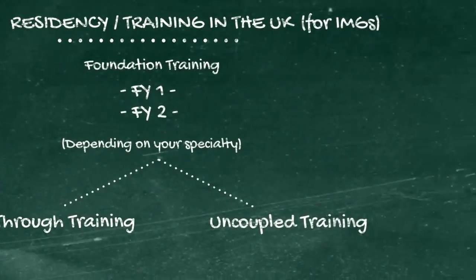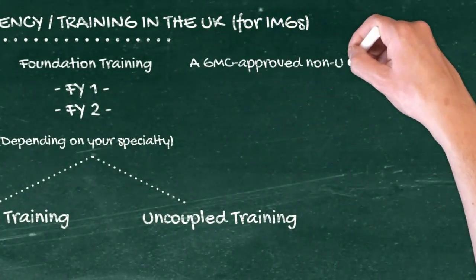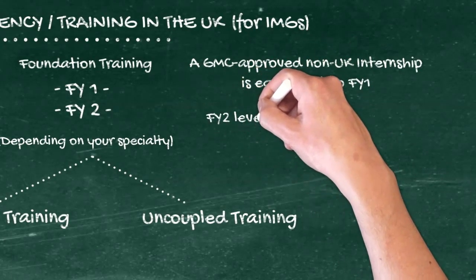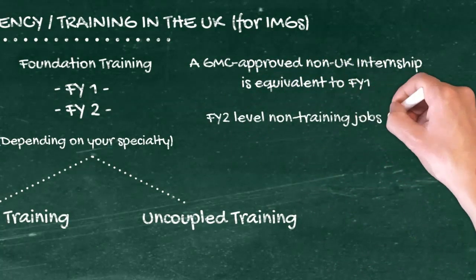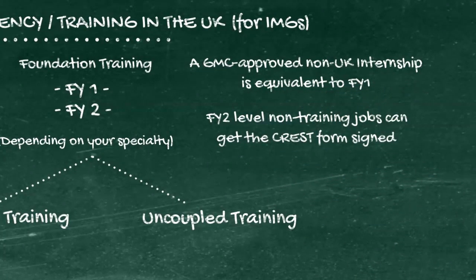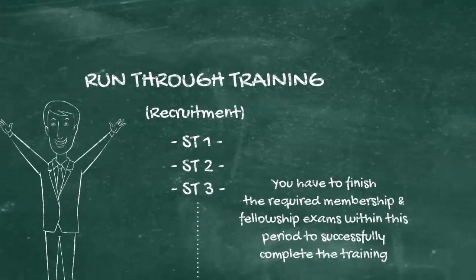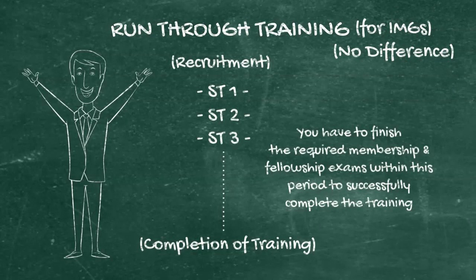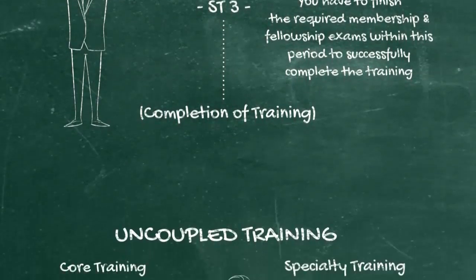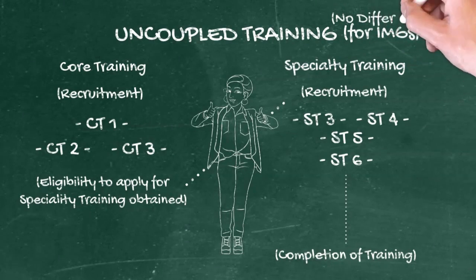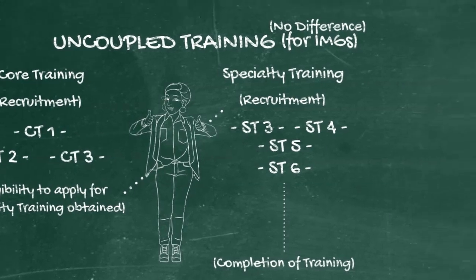So what happens for IMGs? For FY1, if you have completed a GMC-approved internship, you don't have to go through FY1. For FY2, if you do a non-training job you can get the CREST form signed, which will be equivalent to FY2. Run-through training for IMGs is no different at all — it's the same process of recruitment. For uncoupled training, such as internal medicine training which I am currently in, the whole pathway is not any different for IMGs.